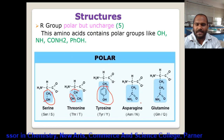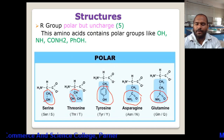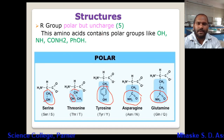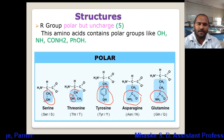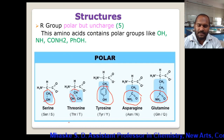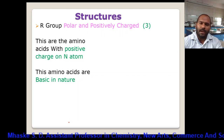In asparagine there is a presence of an amide group, and similarly in glutamine there is a presence of an amide group. This second class has polar but uncharged R groups — they are polar because of the electronegativity difference between carbon and the heteroatoms, but they carry no net charge.